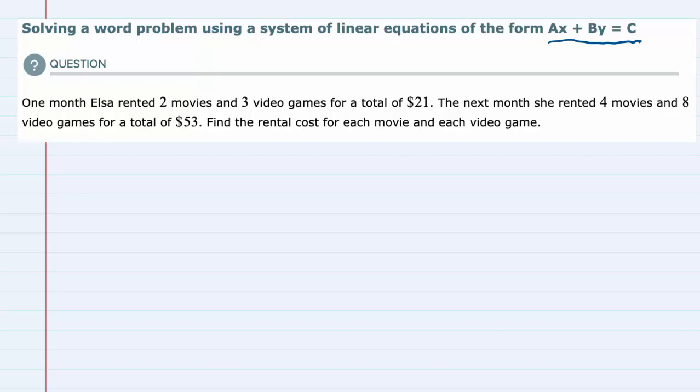From the description, we're told that we're going to have a System of Linear Equations and it's going to have this form AX plus BY equals C. The two things that we're asked to find is the cost of each movie and the cost of each video game.